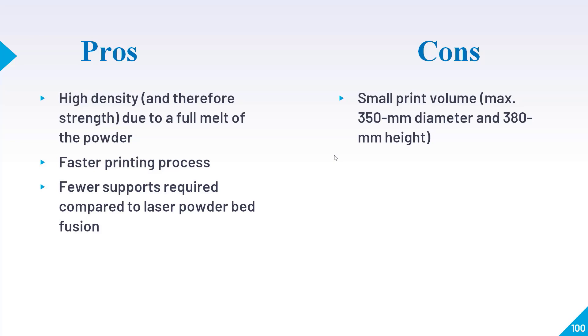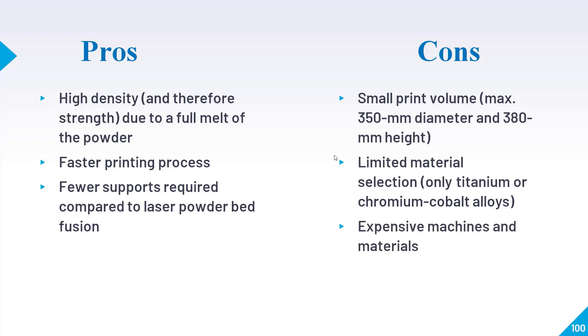If I talk about some disadvantages, then small print volume - because we need to maintain such low pressure and vacuum, print volume is very low. Maximum 350mm diameter can be produced in this type of 3D printer. Limited material selection - only titanium or chromium-cobalt alloys are available.